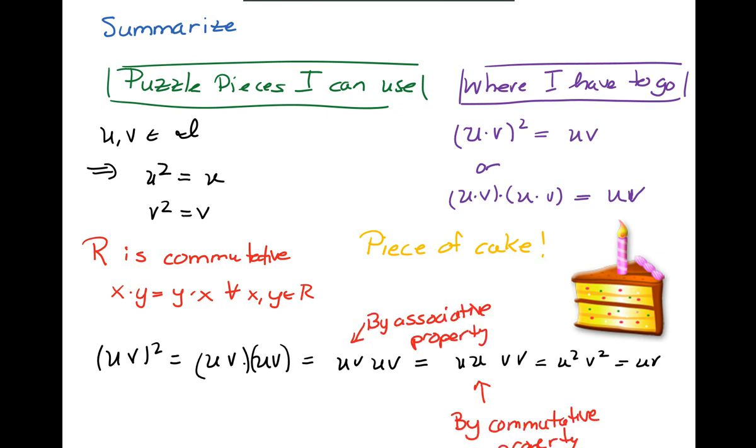Where does each thing come from? Well I'm allowed to drop the parentheses by the associative property of multiplication on a ring, and I'm allowed to swing the order of these things around because of the commutative property. Right over here, u squared v squared equals uv, I'm using the fact from the known that u squared is u and v squared is v.